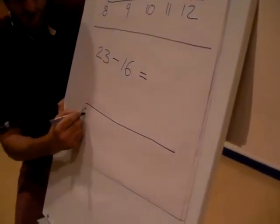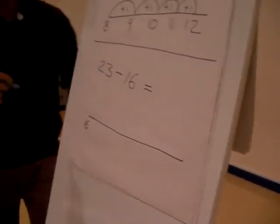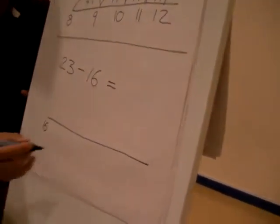The smallest number, well done. We start with our smallest number, we jump up from 16 up to the biggest number which is 23.